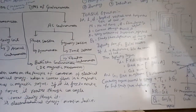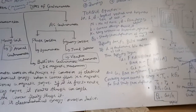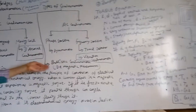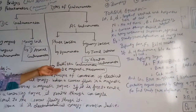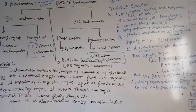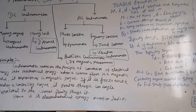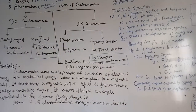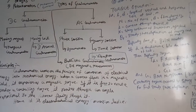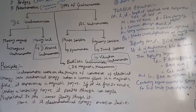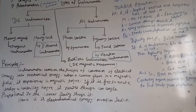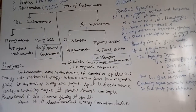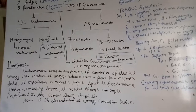Another is the ballistic galvanometer, which is also specified as DC magnetic measurements. That is, magnetic energy is measured by the ballistic galvanometer.